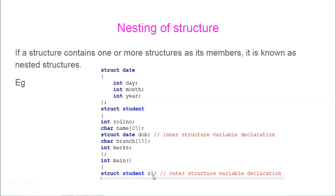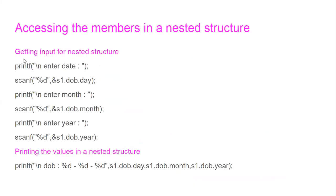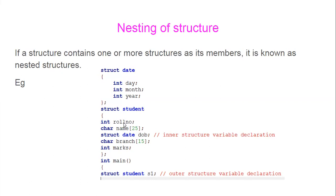Now we will see how to enter data for this DOB and how to see the values stored in this structure within structure. You know how to get the input for role number, name, and so on using the dot operator. Since we have declared S1, you use S1 dot role number, S1 dot name, S1 dot branch, S1 dot marks like that to receive and display the data. Now here we would like to know how to access the nested structure, because there are two structures — one is outside S1 and inside is DOB. Within DOB you have to access all these things.